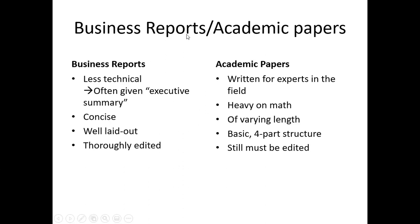Business reports are different than academic papers. Academic papers are written for experts who know the math and the ideas — you would actually be insulting them by being too easy. They still follow a basic four-part structure with an introduction, a literature review possibly included, as well as methods, results, and then a conclusion. These sections vary in length depending on the project. They can be 15 pages, sometimes 30, and with robustness checks, sometimes 50 pages or more. As long as they're good, there's no set length.